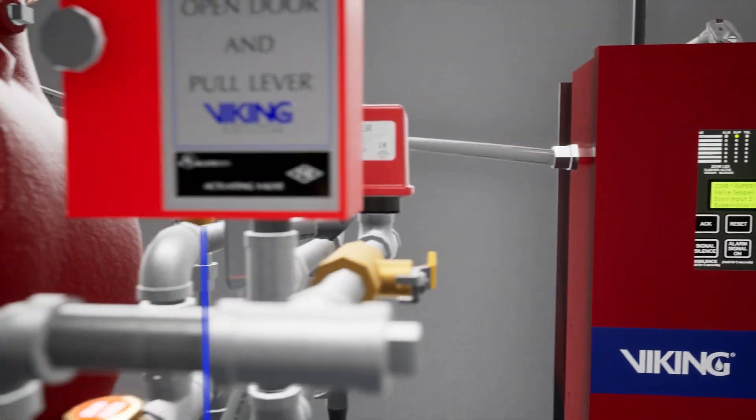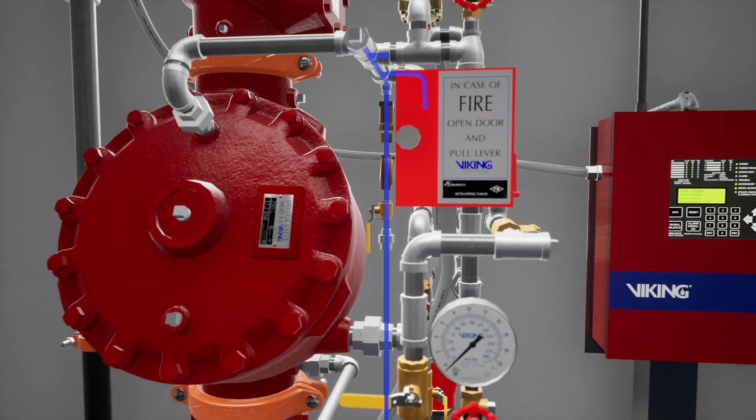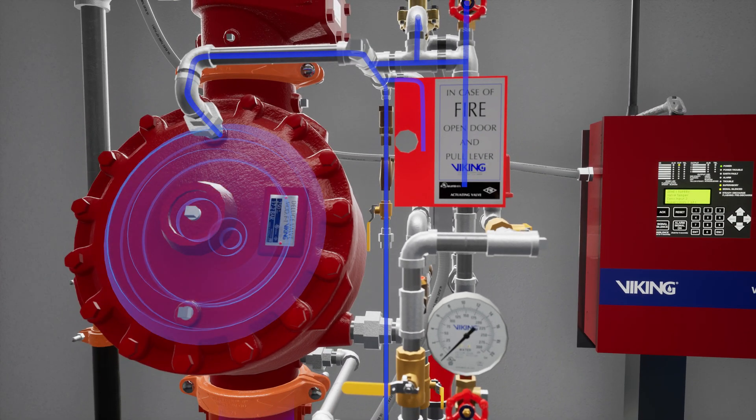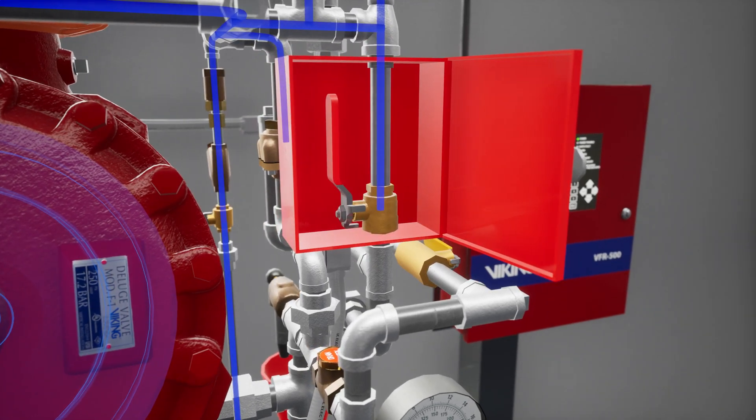Open the priming valve and allow the priming chamber pressure to build. Let's open the emergency release to establish flow through the priming chamber. This will remove any air trapped in the priming chamber.